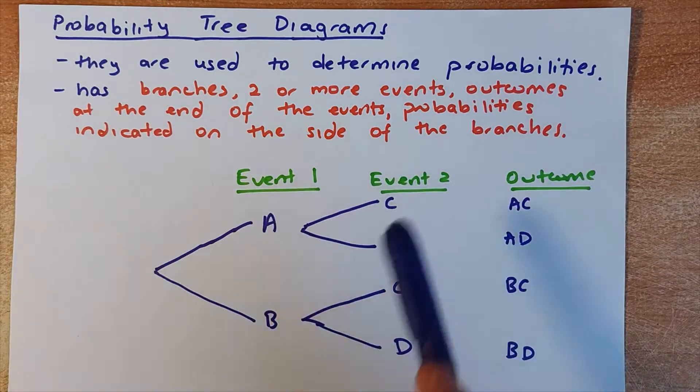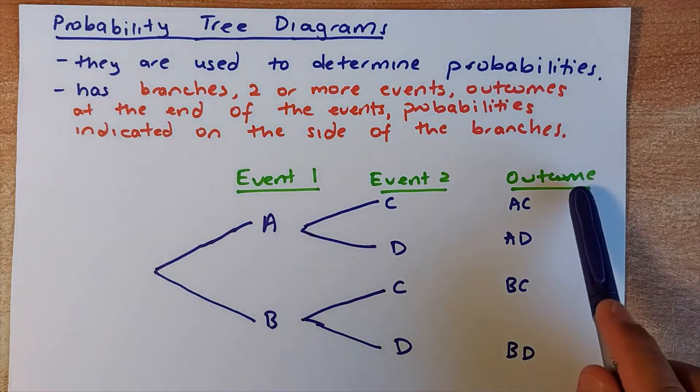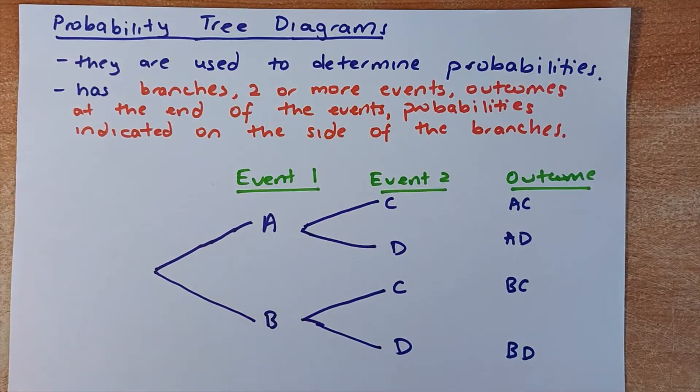Two or more events, so event 1 and event 2. And at the end of the event, we have the outcomes. And the probability is indicated at the side of the branches.